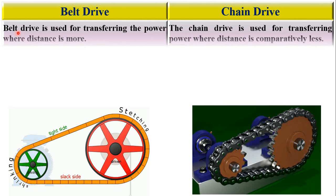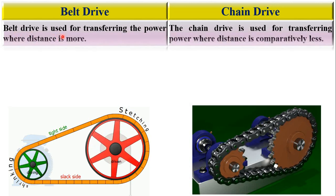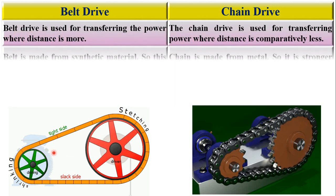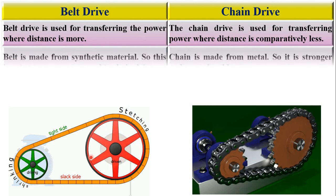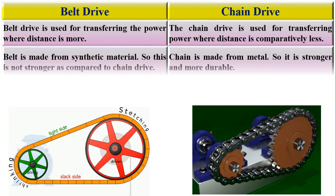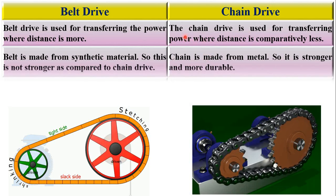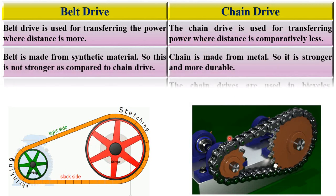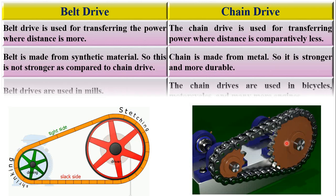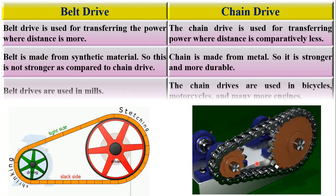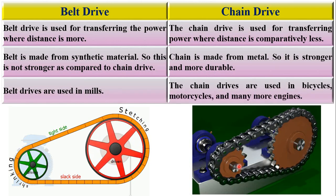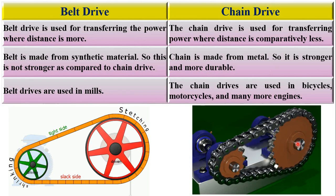Belt drive is used for transferring power where the distance between the driving shaft and driven shaft is more. Whereas in the case of chain drive, it is used for transferring power where the distance between the driving shaft and driven shaft is comparatively less.